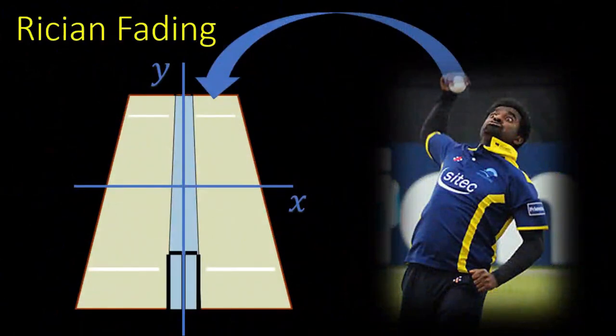Now this was about the Rayleigh fading. Now for the Rician fading perspective, consider a right-handed off-spin bowler, for example Muralidaran, who spins the ball big time. The ideal pitch map of Muralidaran is tilted up and left.